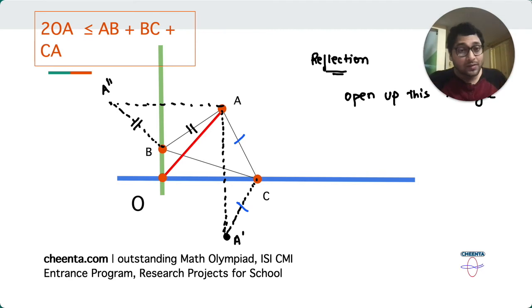So what did we learn? We learned that we do reflection because we want to open up the triangle. So we want to open up this triangle, right? That strategy will be applicable in quadrilaterals and other problems maybe. So keep this in mind. Now, how does that help?